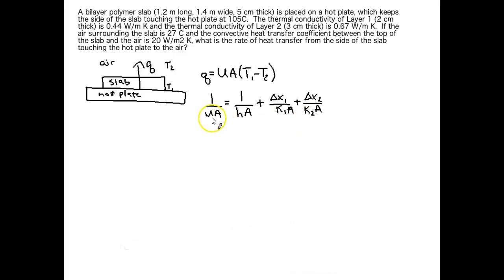Let's break down the equation for 1 over UA. We write this by following what modes of heat transfer we have as we move from one point in our system to the next. 1 over HA takes care of the convective heat transfer from the air to the slab.